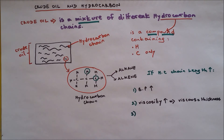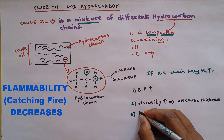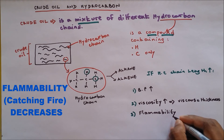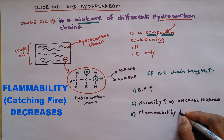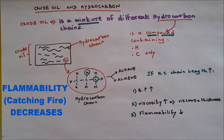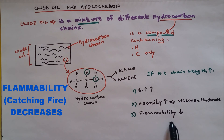Number 3: flammability. Flammability decreases, so a longer chain doesn't catch fire easily. For example, if you take petrol and diesel — diesel has a longer chain than petrol, which means petrol catches fire more easily than diesel. The definition for flammability is how easily it catches fire.